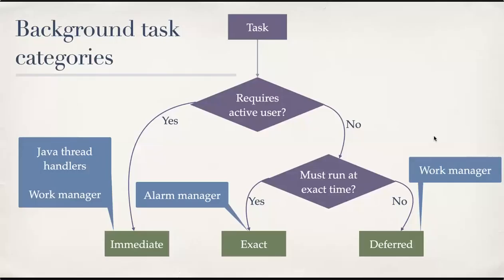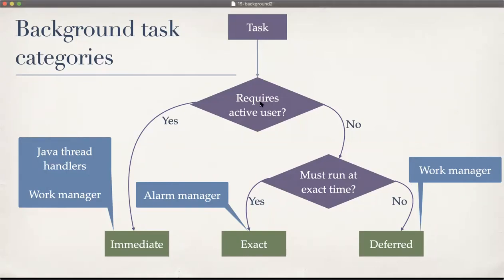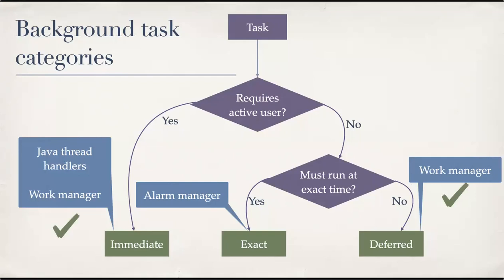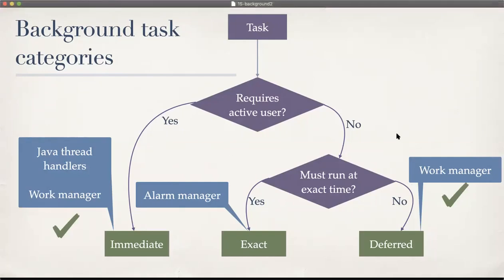Hello and welcome back to our discussion on background tasks. Last time we looked at this flow — whether the task requires an active user, and based on that you make some decisions whether it should run at an exact time. We saw WorkManager and went a little deeper into how to implement that. Java threads, we saw the executor example with databases, but more details are left as an exercise. The remaining piece is the Alarm Manager, and that's what we'll talk about now.